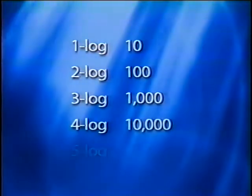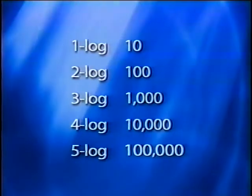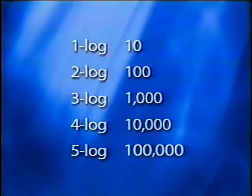The five log reduction is based on logarithmic numbers, hence five log. Each log represents a ten-fold difference. For example, one log is 10, two log is 100, three log is 1,000, four log is 10,000, and five log is 100,000. Therefore, if you were going to reduce the number 100,000 by five log, you would need to go down to one. Alternatively, if you started from 100, you would need to go down to 0.001.